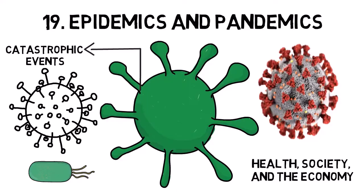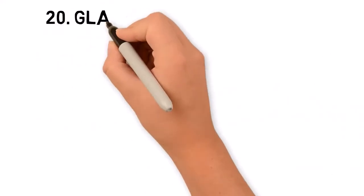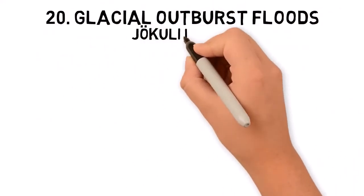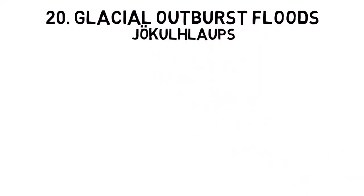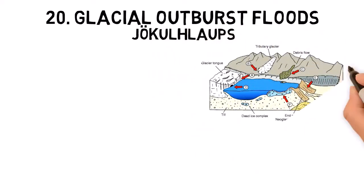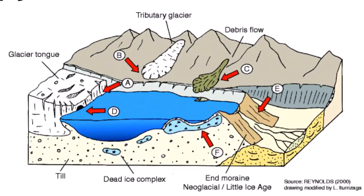Glacial outburst floods, also known as jökulhlaups, occur when water trapped in a glacial lake suddenly breaks through the ice, releasing large amounts of water, ice, and debris.